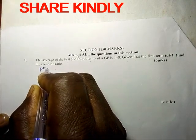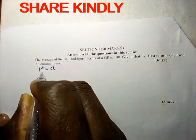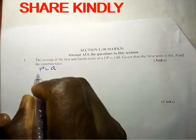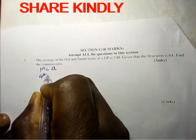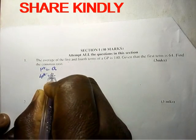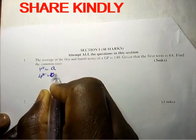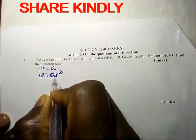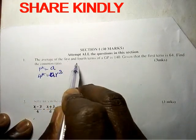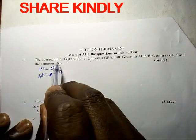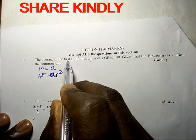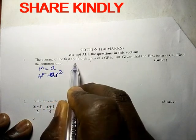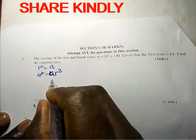The first term is actually a, and then the fourth term is a r cubed. So the average means you add them and divide by 2. So that is the average.